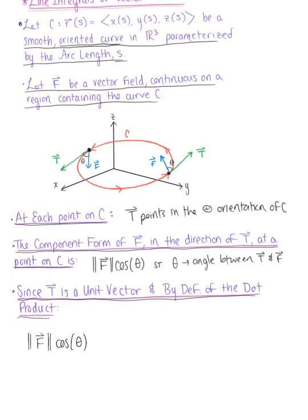And since we know that vector T is a unit tangent vector, we can simply rewrite this as the magnitude of the vector field multiplied by the magnitude of the unit tangent vector multiplied by cosine of theta. Because the magnitude of the unit tangent vector is just one, and by the definition of the dot product, we see that this is equivalent to simply the dot product of the vector field and the unit tangent vector.